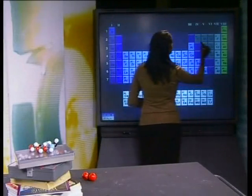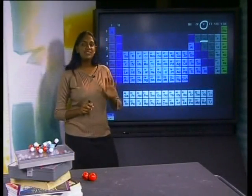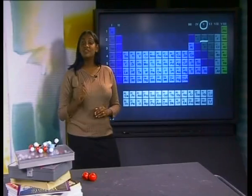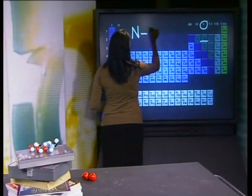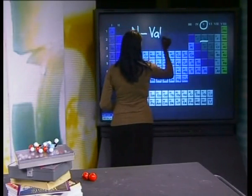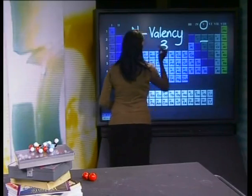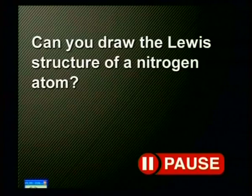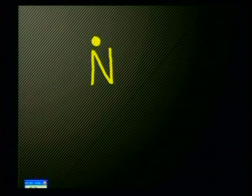Nitrogen is in group five in the periodic table, which means that it has five valence electrons and a valency of three. Can you draw the Lewis structure of a nitrogen atom? Look, here are the three unpaired electrons.